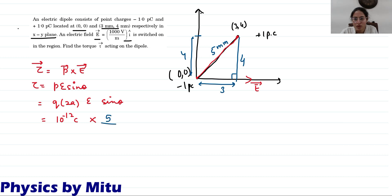2A is 5 mm divided by 1000 converted into meter. Electric field - you have given 1000 volt per meter. Sin theta value - what is sin theta? What is theta? It is the angle between P vector and E vector.